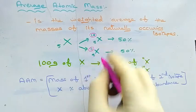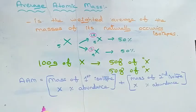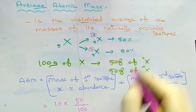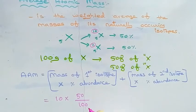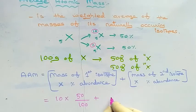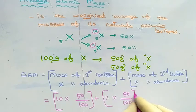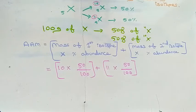In the first isotope the mass is 10 and the percentage abundance is 50. 50 should be divided by 100 because we are converting percentage into a number. This should be added with the mass of the second isotope, which is 11, into 50 divided by 100, because that isotope is also abundant 50% in nature.